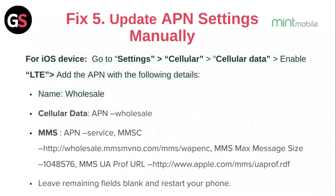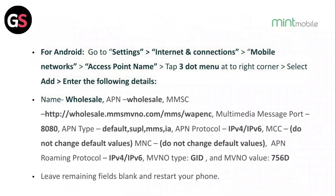Fix 5: Update the APN and settings manually. For iOS, go to Settings, then Cellular, then Cellular Data. Enable LTE and add the APN with the following details. Leave the remaining fields blank and restart your phone.